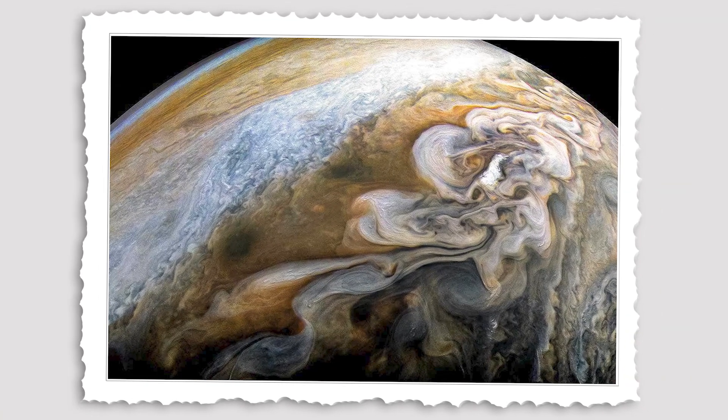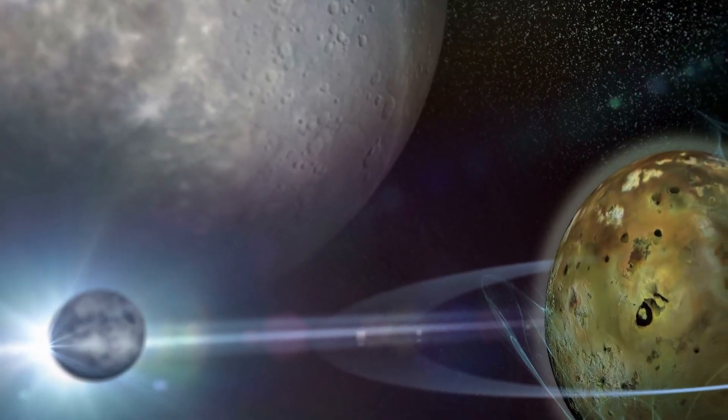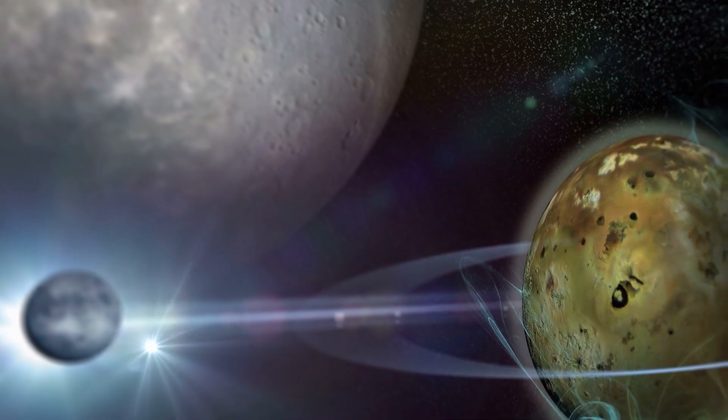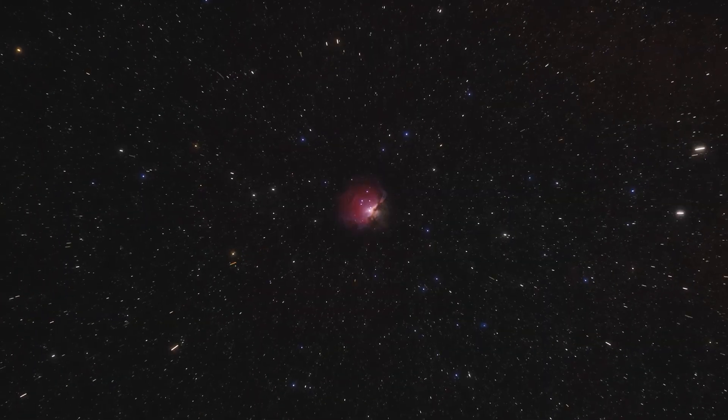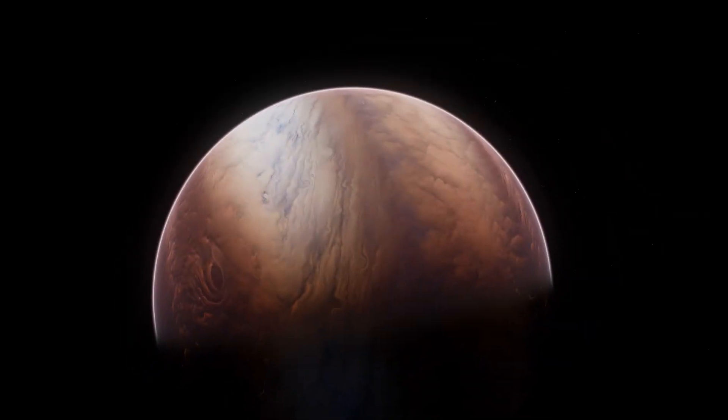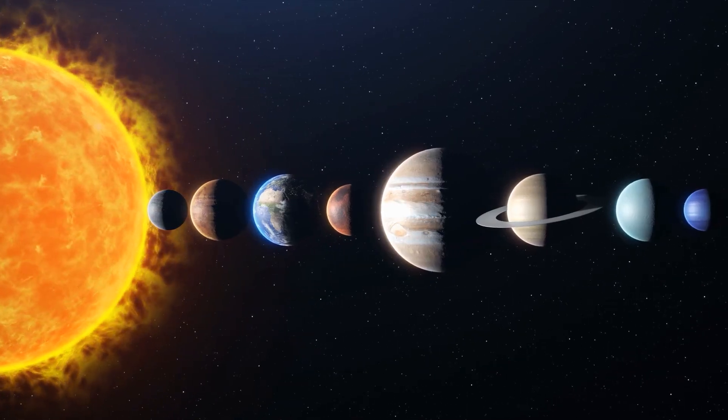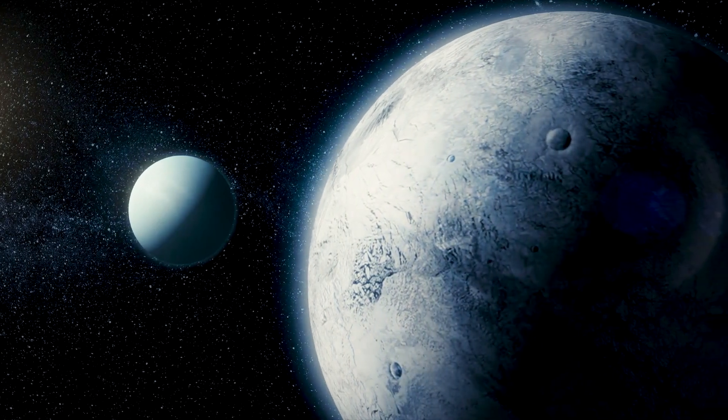The most recent pictures also show the existence of small moons, faint rings, and even far-off galaxies, which makes us re-evaluate our theories about this enormous celestial body. How will these groundbreaking findings change our knowledge of Jupiter and its role in our solar system, and what new insights can we draw from them?